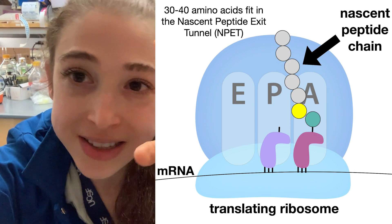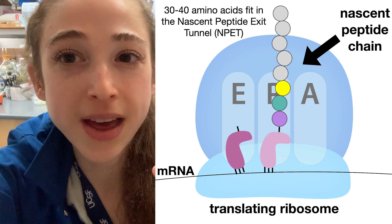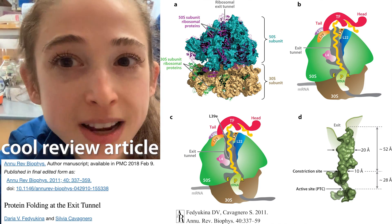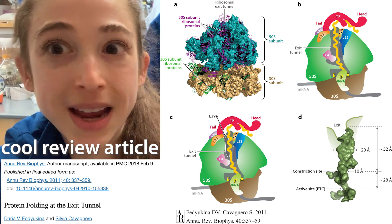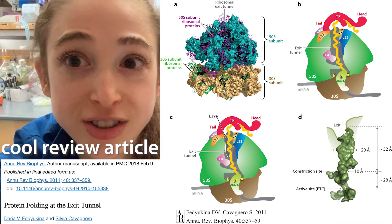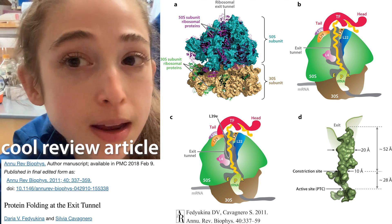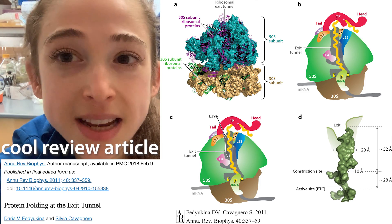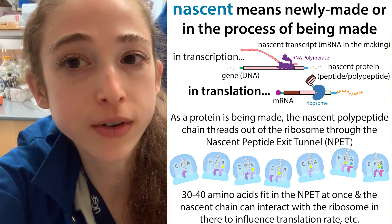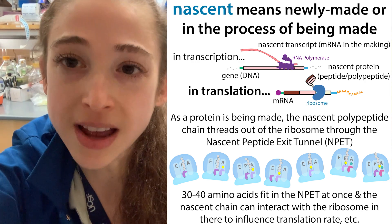There are about 40 amino acids in that tunnel at a time, and then it's coming out and folding up — all of that would be the nascent chain. Sometimes this nascent chain can actually interact with the nascent peptide exit tunnel, which is the part of the ribosome where the chain comes out. So when talking about making a protein, you might see the terms nascent peptide, nascent polypeptide, or nascent chain — these all refer to that amino acid chain coming out of the ribosome and folding up.